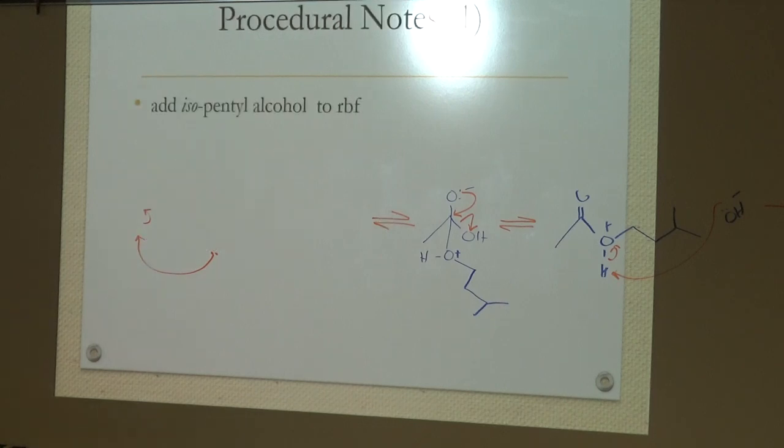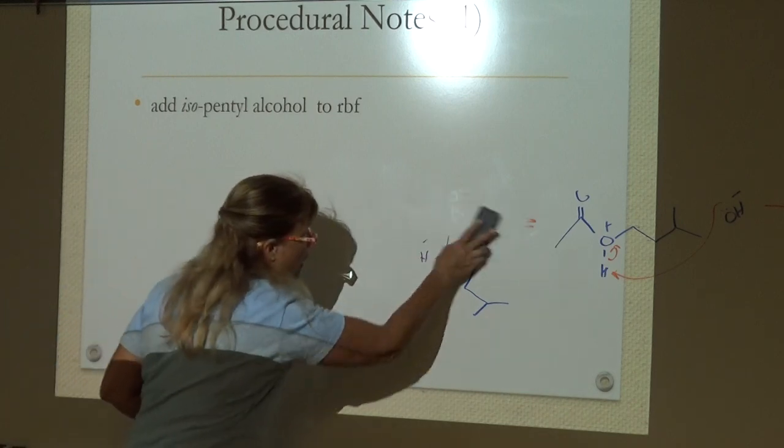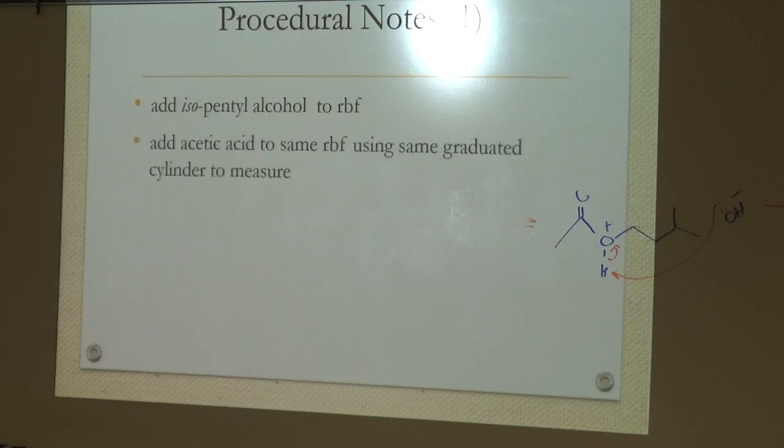Procedural notes. The isopentyl alcohol is going to go into our round bottom flask. We're going to add the acetic acid to the same round bottom. We can use the same graduated tube measure without cleaning it. You're both going to go in there.